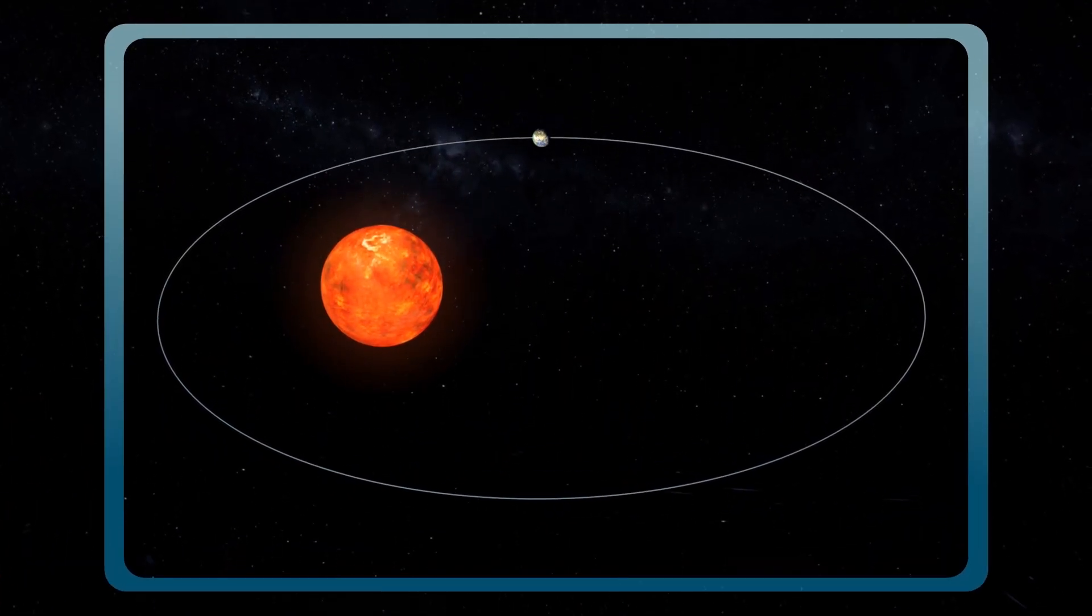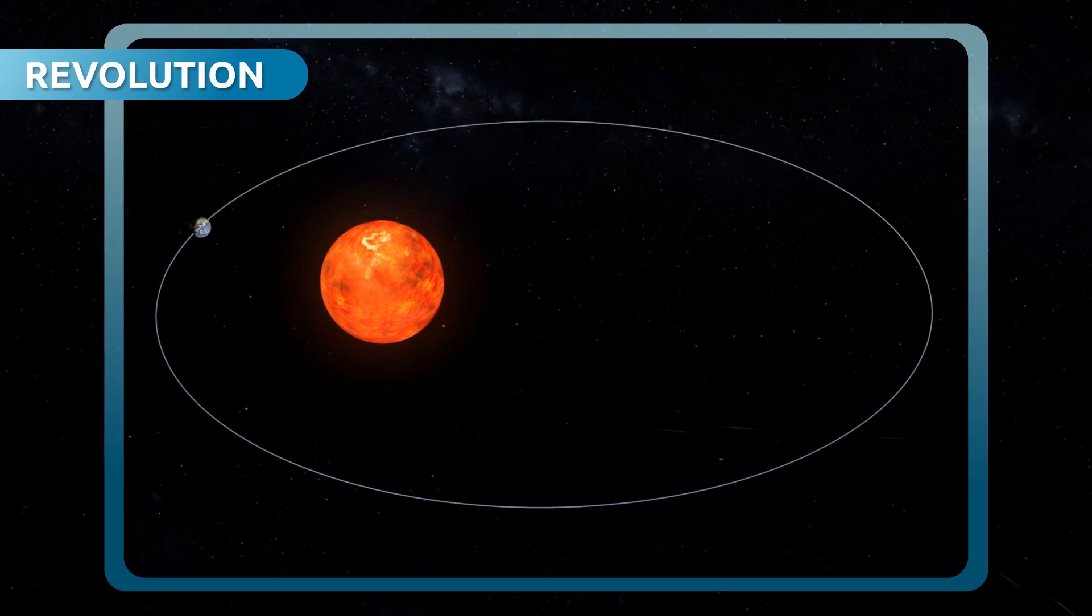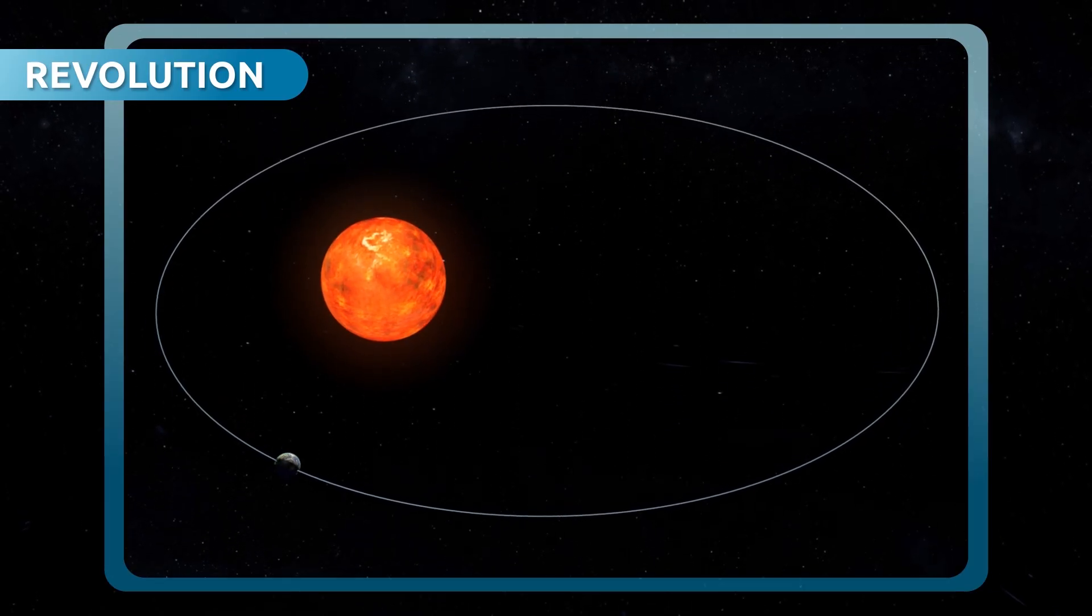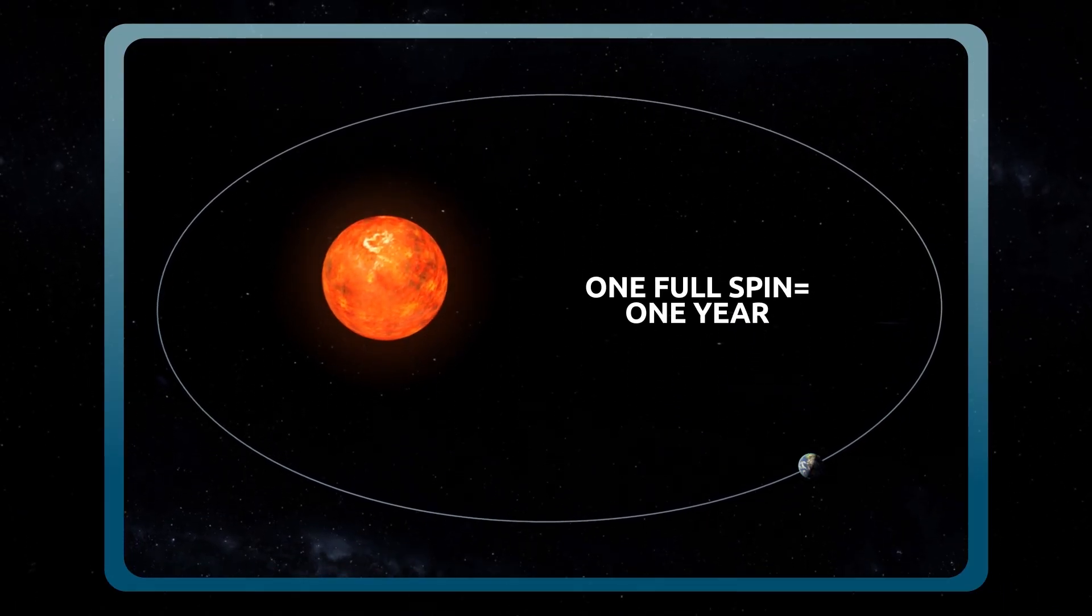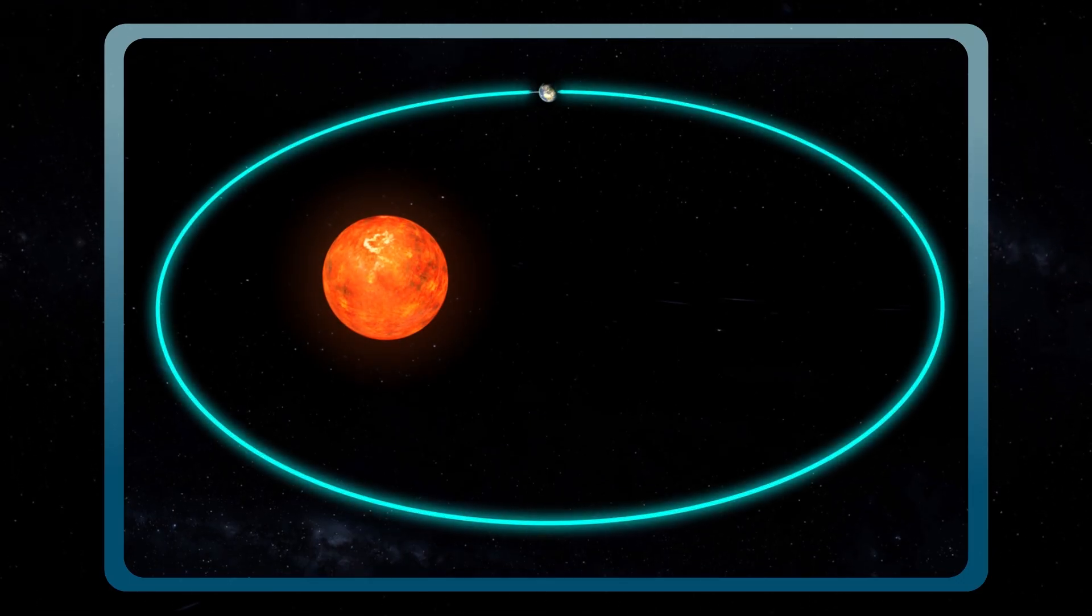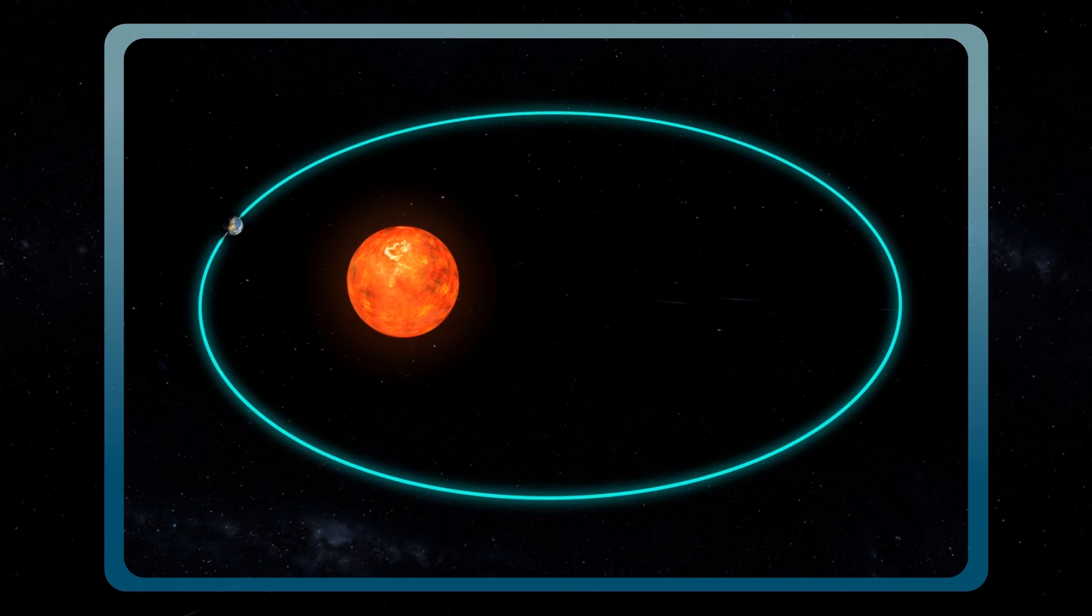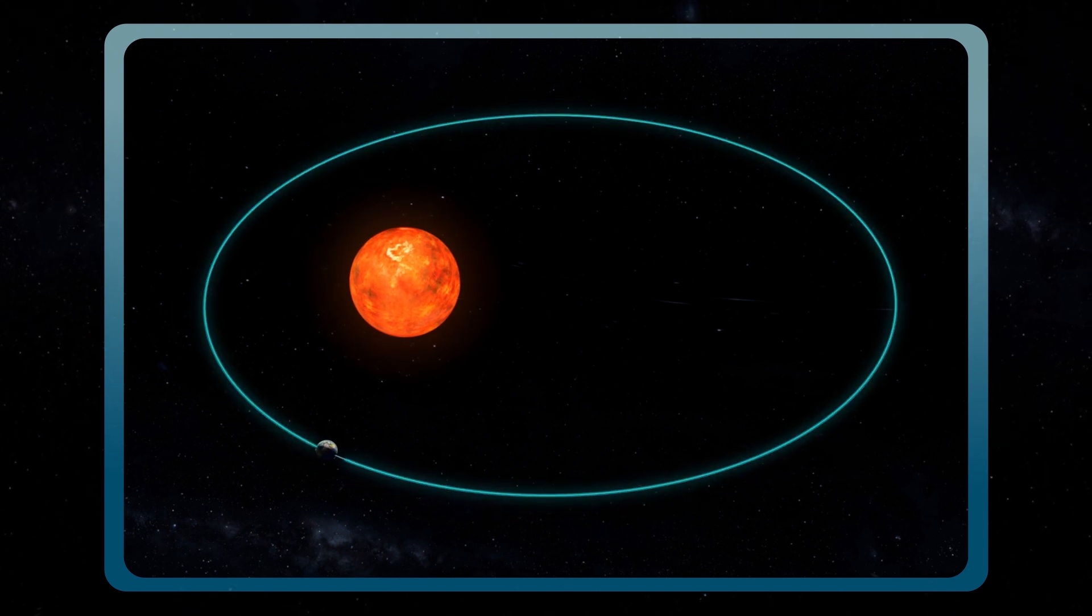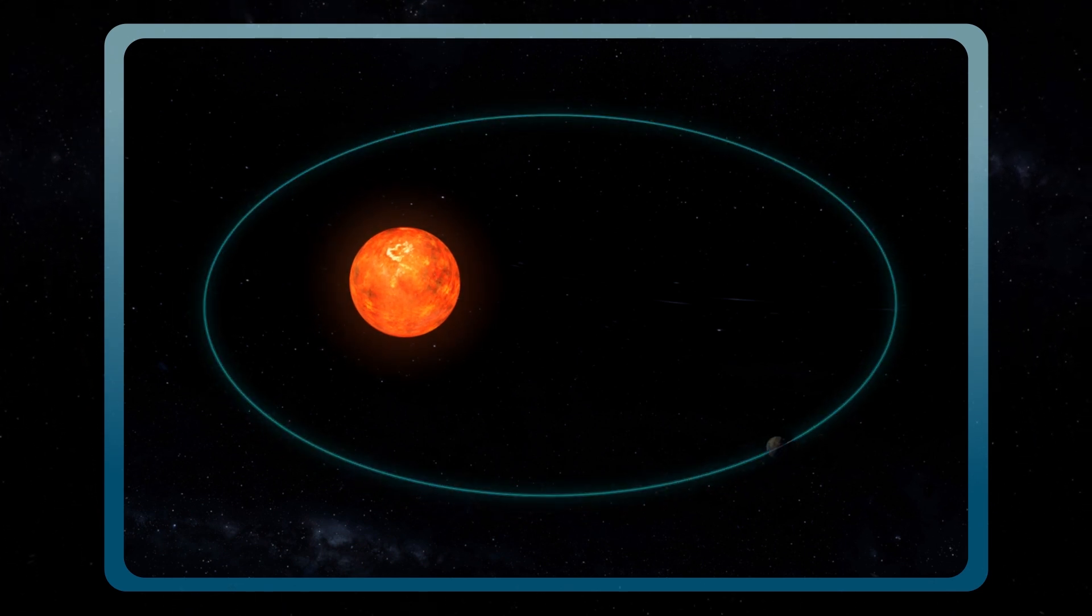The movement of the Earth around the Sun is called revolution. The Earth takes one whole year to go around the Sun. Before, people used to think that the orbit of the Earth around the Sun was cyclical, but they weren't right. As you can see here, the orbit is elliptical.